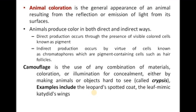The second one is indirect production of organism colouration. Before going further, you have to understand camouflage. Camouflage is the use of any combination of material, colouration, or concealment to make animals or objects harder to see. This is what we call trypsis.